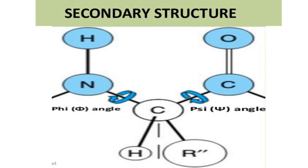In the case of secondary structure, the polypeptide chain can arrange itself into characteristic helical or pleated segments. Hydrogen bonding interactions between adjacent amino acid residues are seen in this secondary structure. Free rotation is possible about only two of the three covalent bonds of the polypeptide backbone.